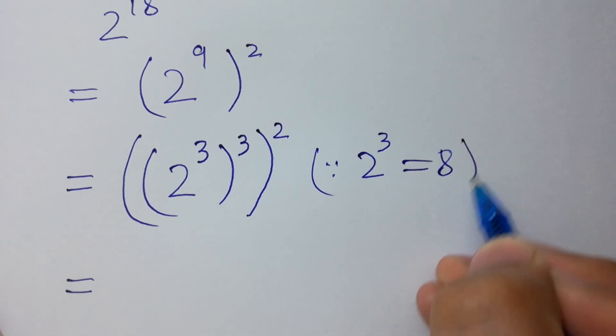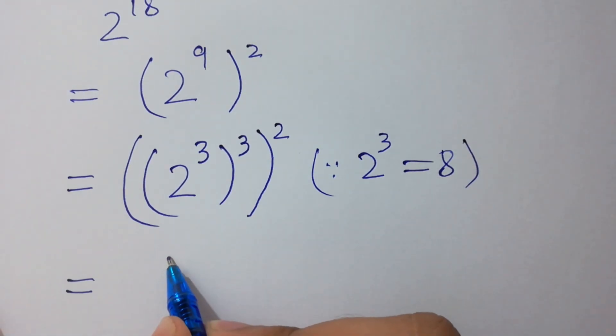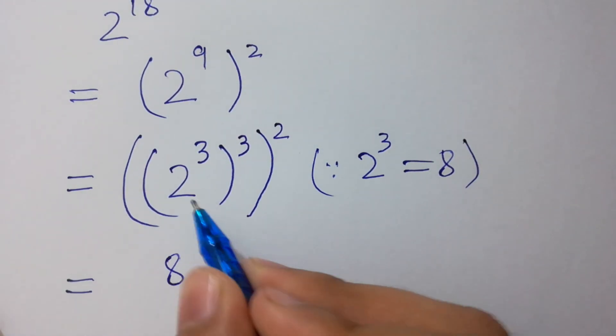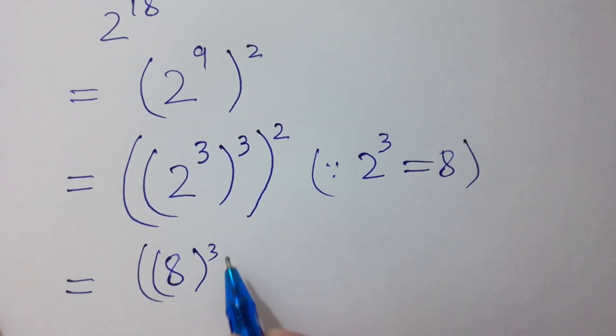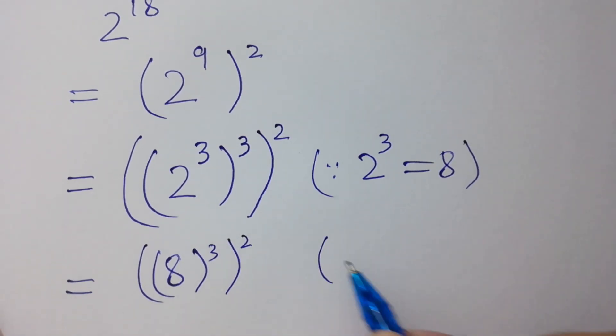we can write 8 to the power 3, and then squared. Since 8 cubed equals 512,